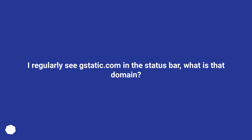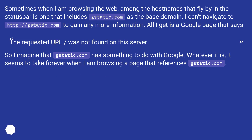I regularly see gstatic.com in the status bar — what is that domain? Sometimes when I am browsing the web, among the hostnames that fly by in the status bar is one that includes gstatic.com as the base domain. I can't navigate to http://gstatic.com to gain any more information. All I get is a Google page that says the requested URL was not found on the server. So I imagine that gstatic.com has something to do with Google. Whatever it is, it seems to take forever when I am browsing a page that references gstatic.com.